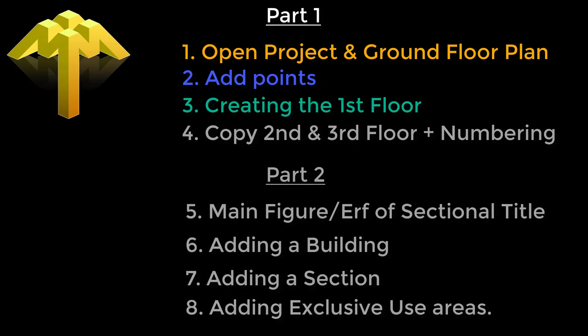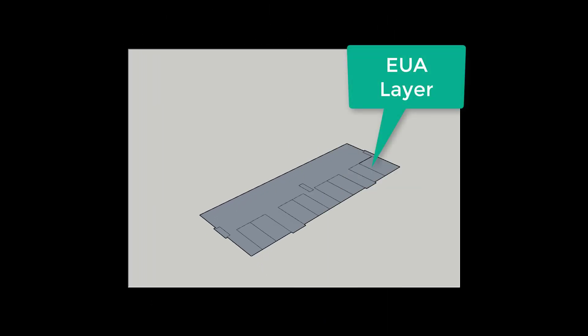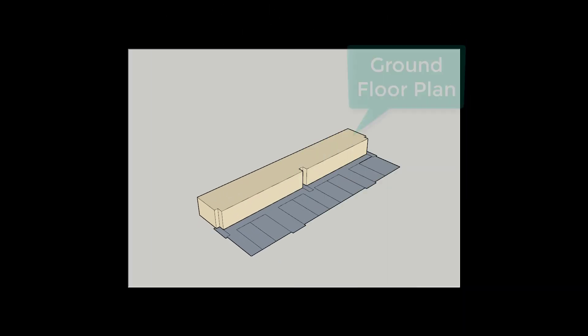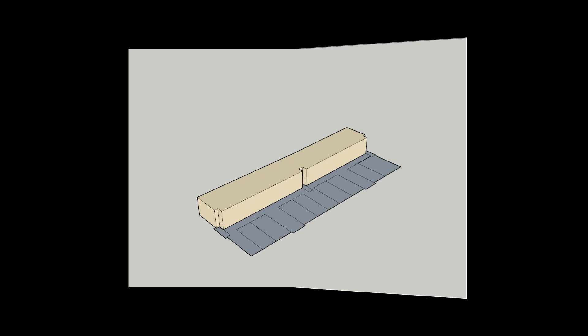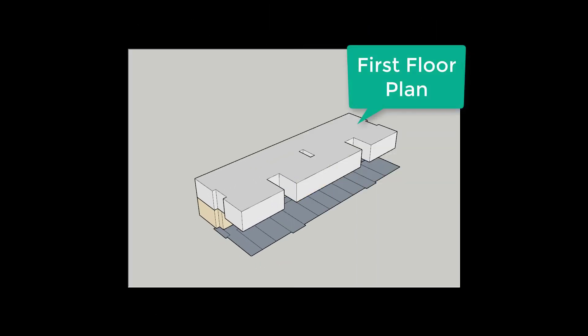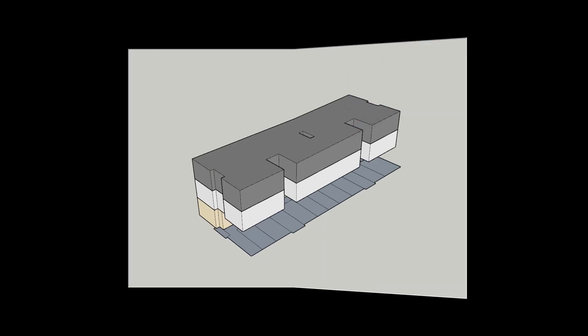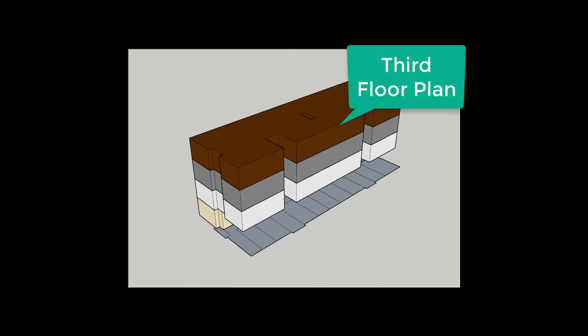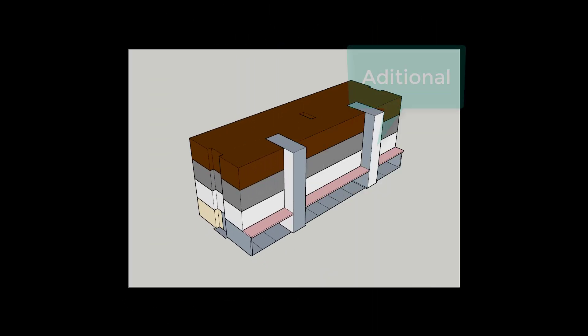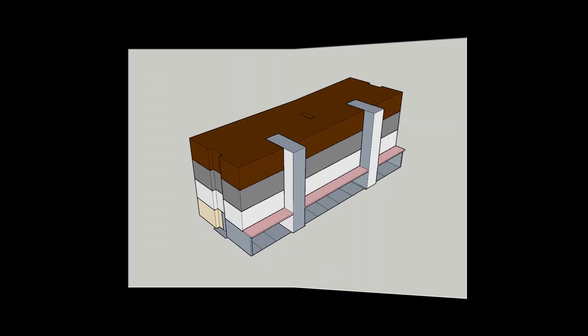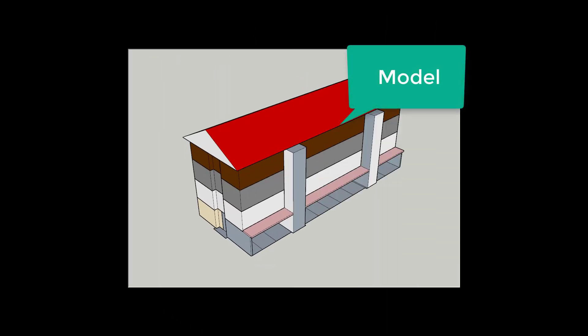In the second video part 2 we will continue to cover the rest of the steps. The building example we use consists of a block layer, exclusive use layer, ground floor, first floor, second floor and third floor. We also have some additional information and the complete building looks like this.